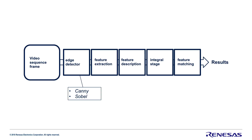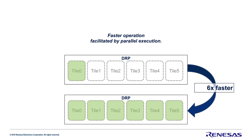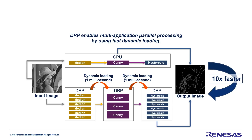Because the DRP in RZ-A2M has six tiles, you can multiply execution performance in image processing applications. And because you can reload in less than a millisecond, you can reconfigure the same DRP hardware to run the next function. So if we take the example of Canny edge detection, you will get your result 10 times faster compared to the software running on the CPU.